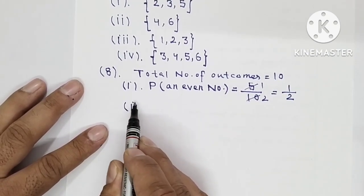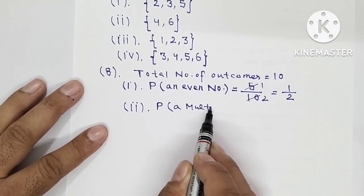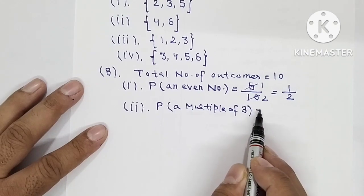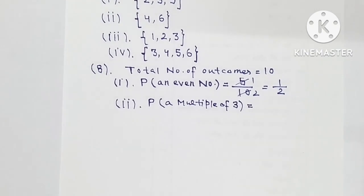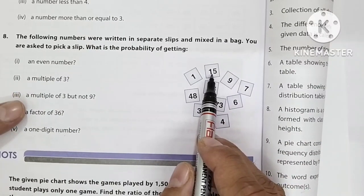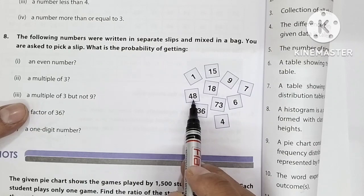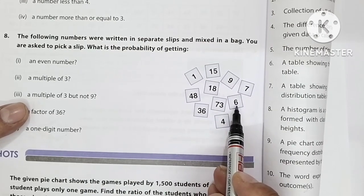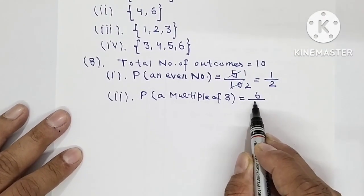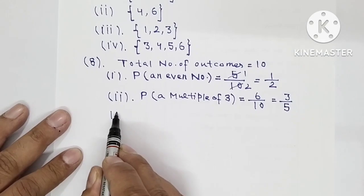Second part — probability of a multiple of 3. Multiples of 3 are those in the 3 times table, or where the sum of the digits is divisible by 3. Looking at the slips, 15 is clearly a multiple of 3, and counting all multiples, there are 6 in total. So the probability is 6 over 10, which simplifies to 3 over 5.